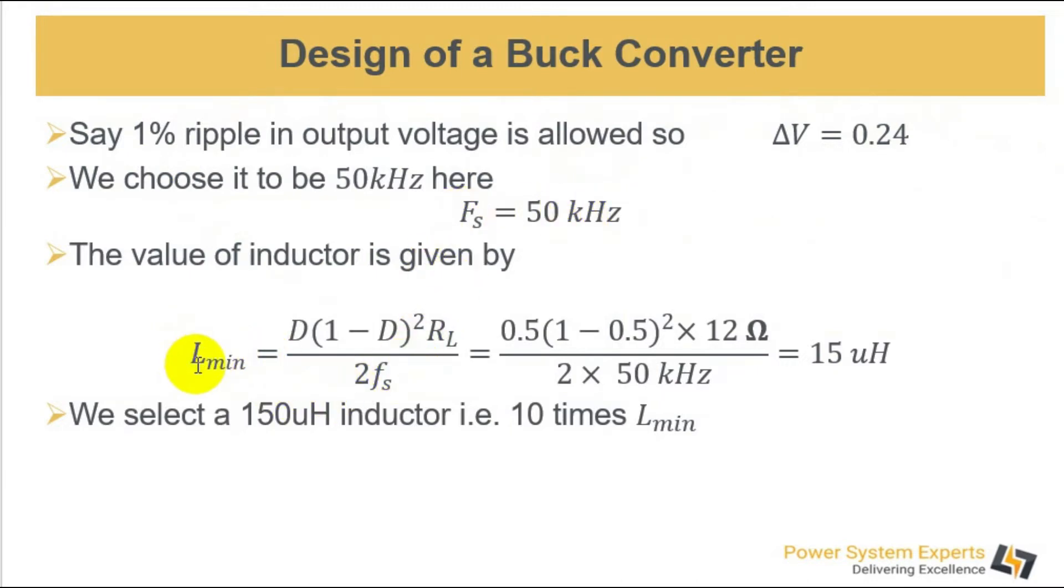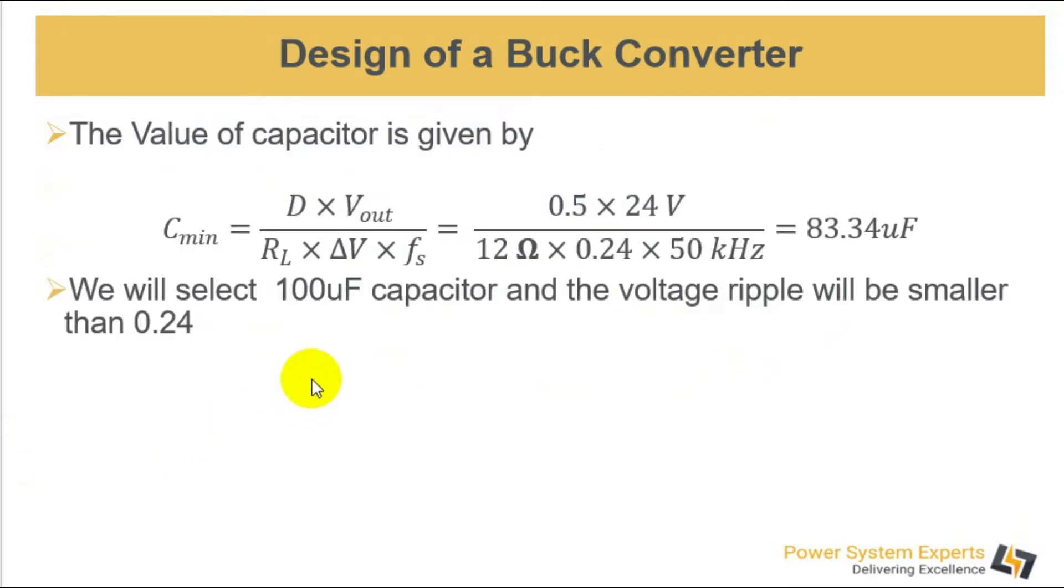According to the formula for minimum value of inductor, your inductance becomes 15 microhenry. So we choose a 150 microhenry inductor, it's 10 times that. The minimum value of capacitor for the selected ripple voltage becomes 83.34 microfarad. So we will select 100 microfarad capacitor and the output ripple voltage will be less than 0.24 in this case.